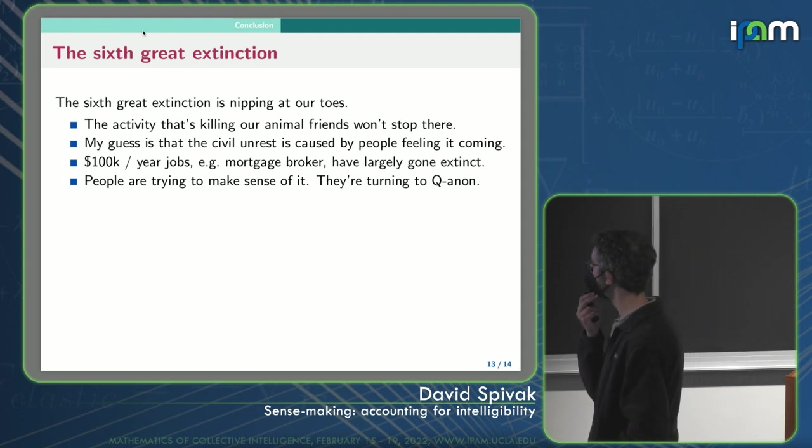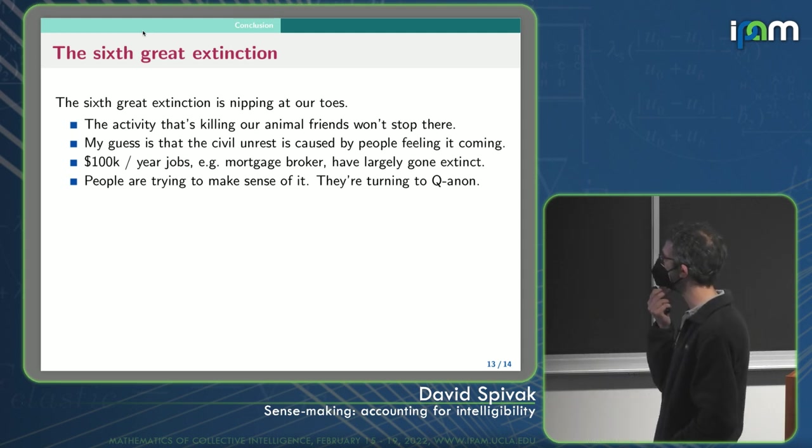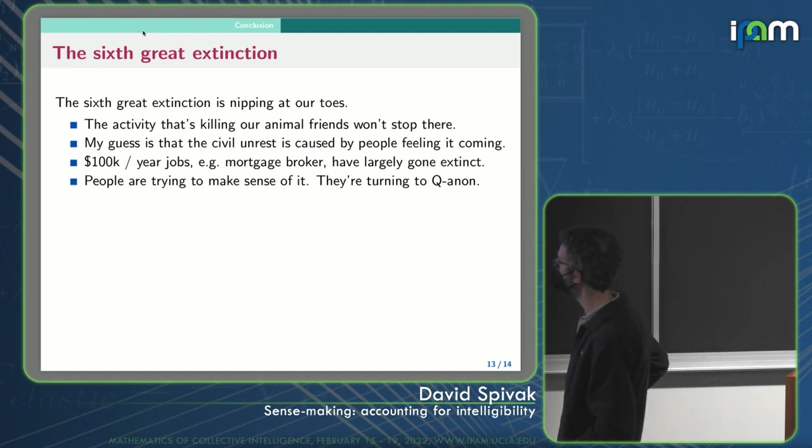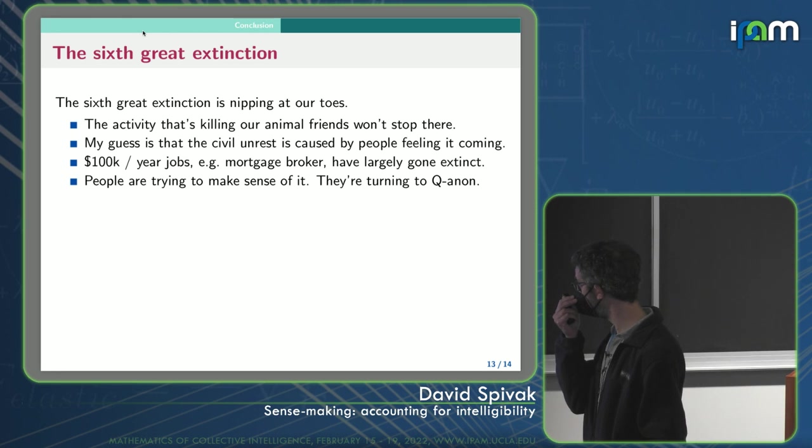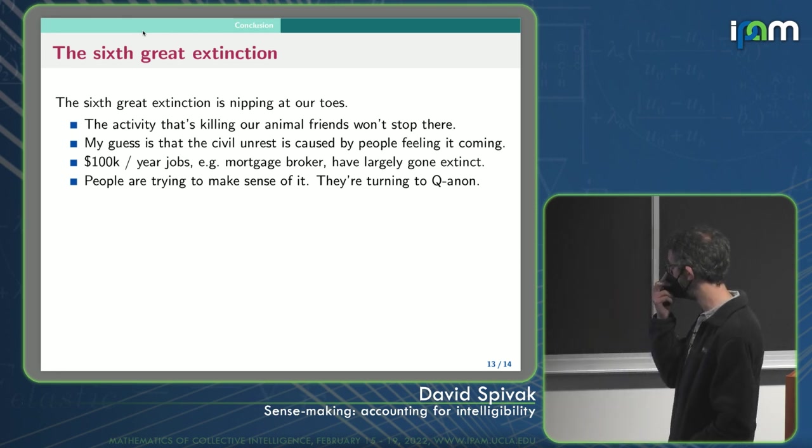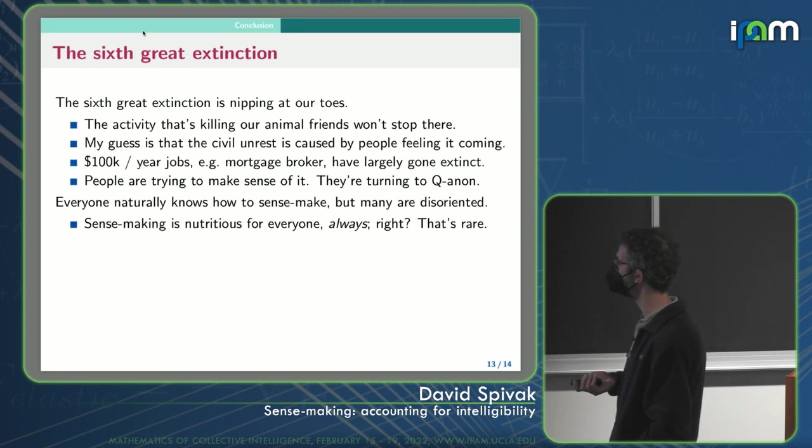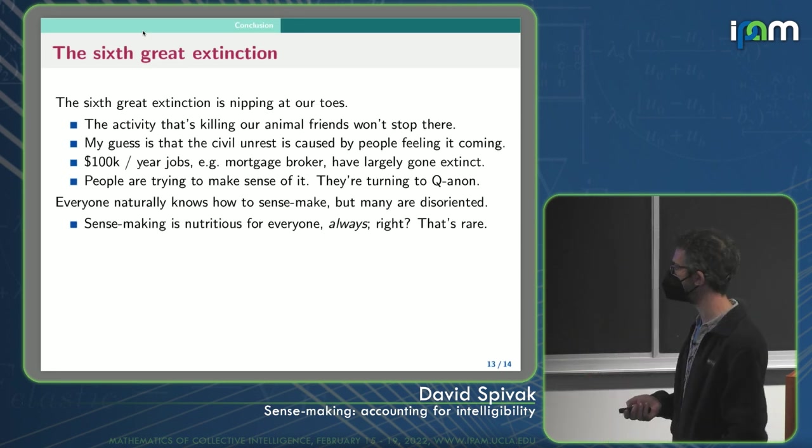Okay, so we're in the sixth great extinction. It's nipping at our toes. I think the activity we're doing that's killing animals is not going to stop there. And my guess is that the civil unrest is caused by people feeling the sixth great extinction coming for them. Because people who were relevant to the system, who were taking their sense making capacity and using it effectively, like someone who's a mortgage broker, 100k a year job, I think those have largely gone extinct. And so at least I know somebody who lost their job to AI. So I think people are trying to make sense of this and it's too hard. And so they're turning to QAnon and stuff like that.